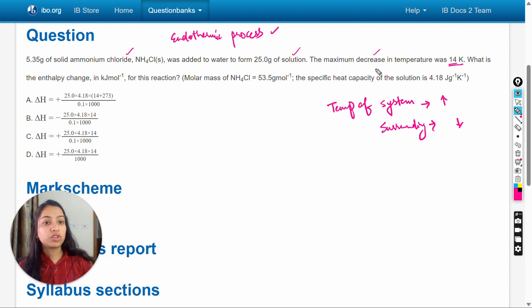So here the maximum decrease in temperature is given, which means here this 14 Kelvin is mentioned for the surrounding. So this is the tricky part here in this question. So we have to understand that this decrease in the temperature is mentioned for surrounding, because for the system which means this solution, temperature will increase because the dissolution is endothermic process.